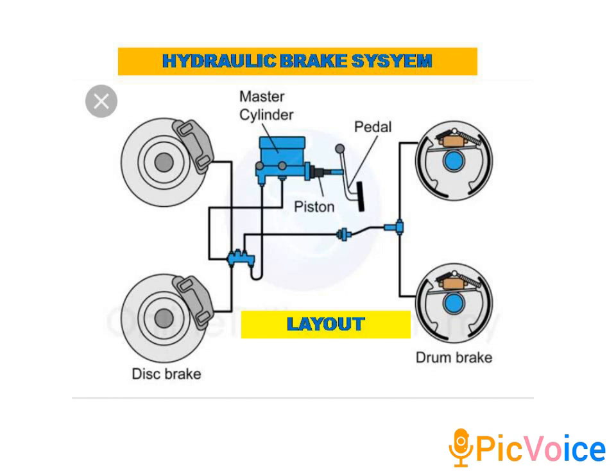There are fluid lines connecting the front and rear brakes and units. In this figure, the front brake is a drum brake. The wheel cylinder is associated with a disc brake, and the caliper is in position.